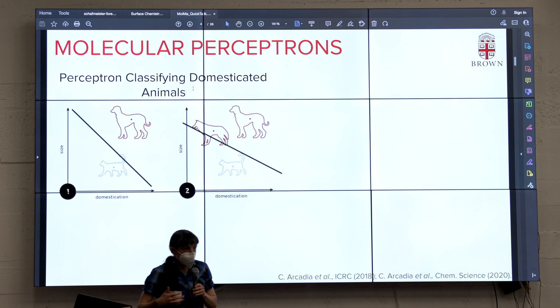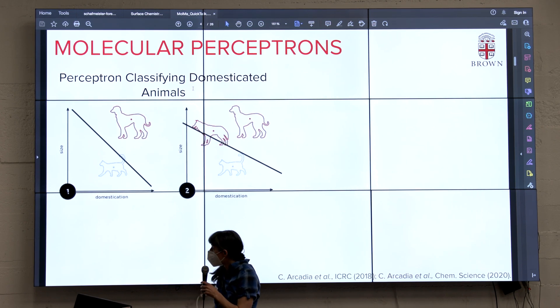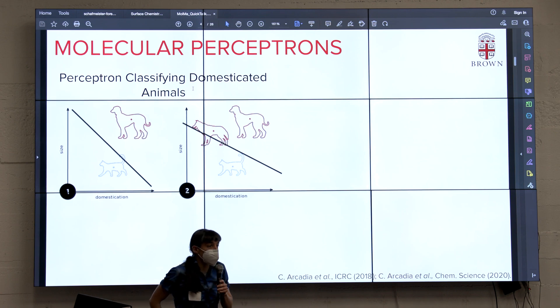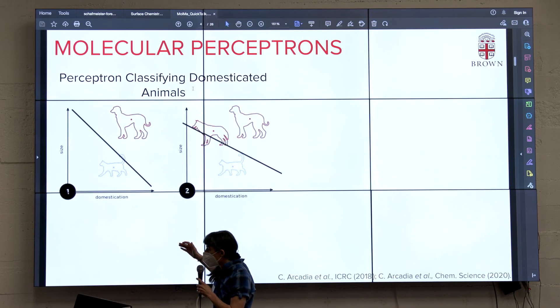We also realized that if we're going to store information in molecules, we want to compute on those molecules as well. I'll show you one example of such computation. We've worked out many schemes. This example is what we call a molecular perceptron. For those not familiar, perceptrons are binary classifiers that take in different inputs and tell you: is it a cat or a dog, one of two different classes?